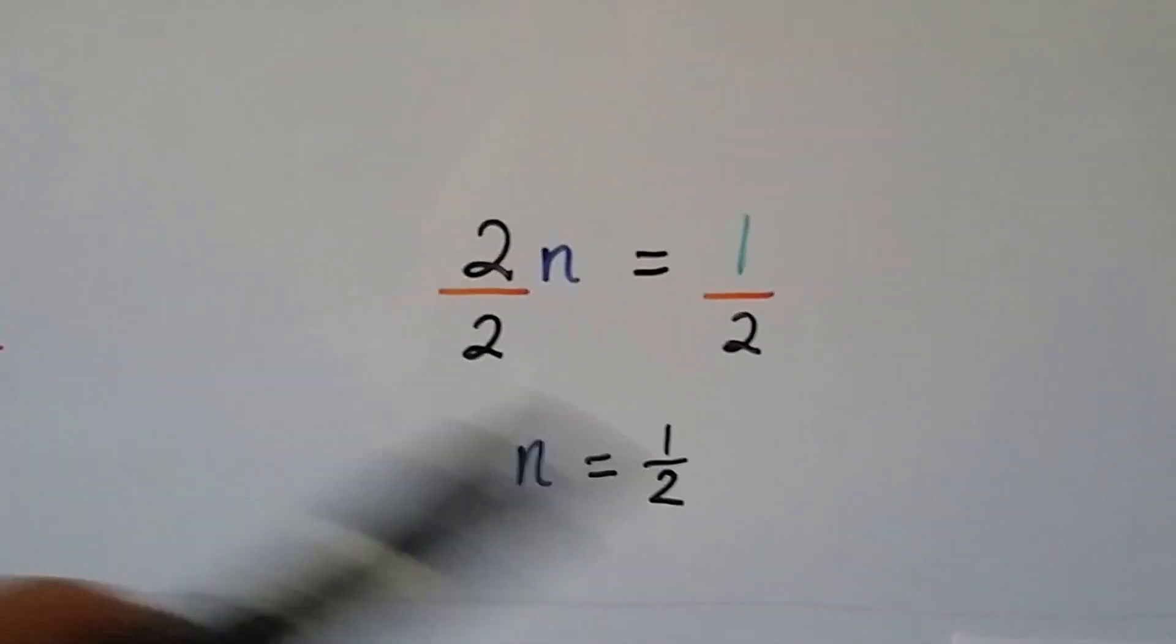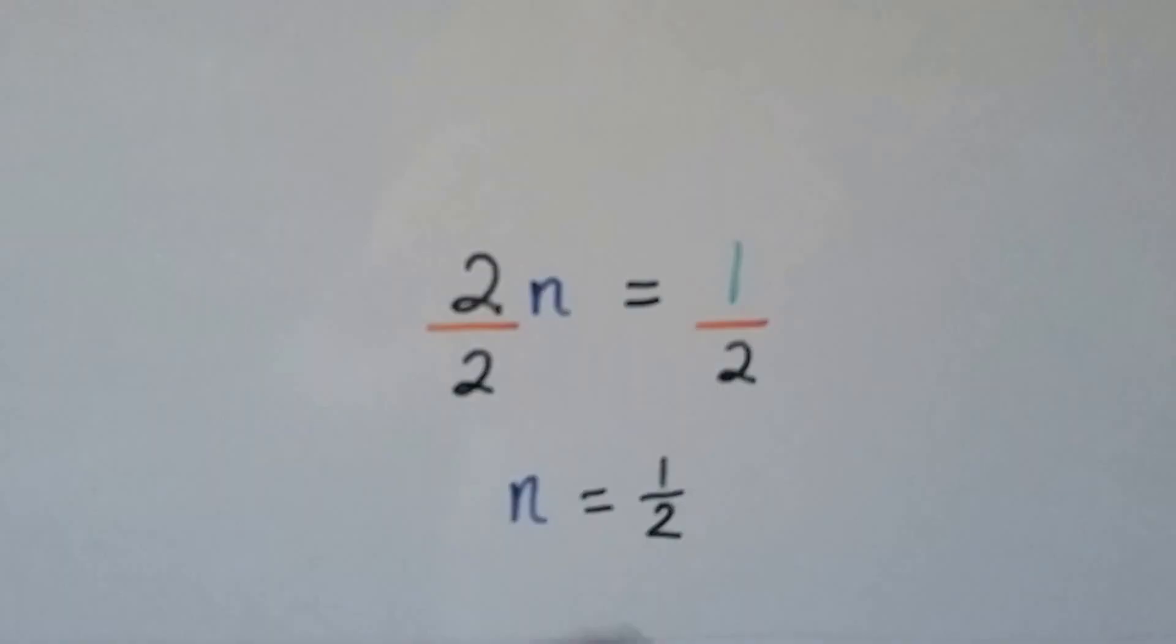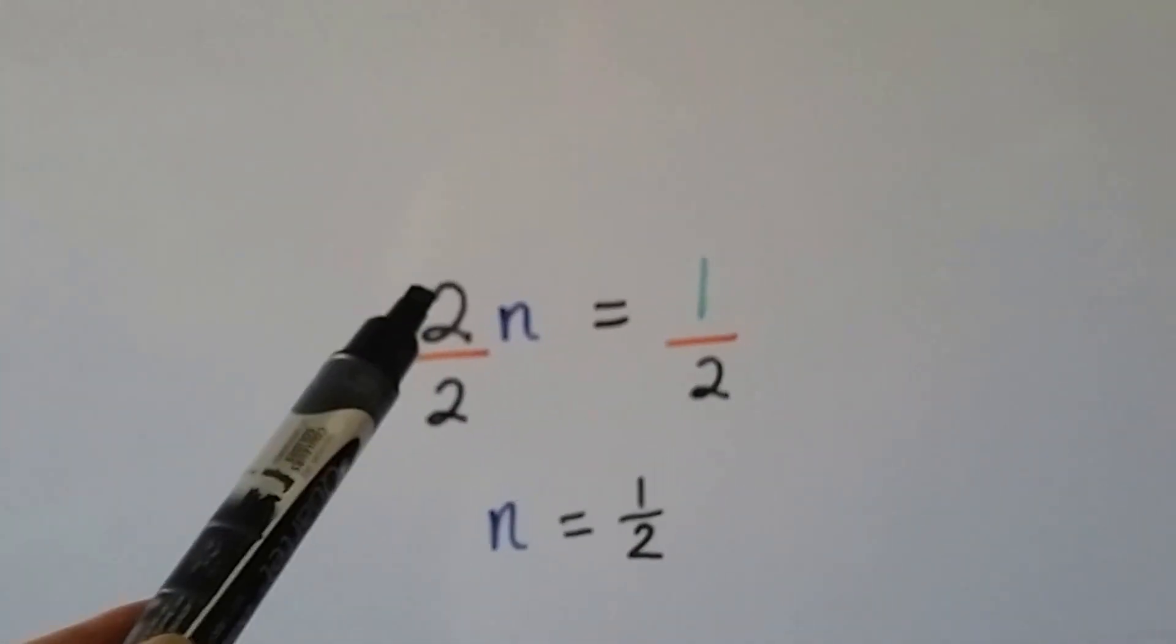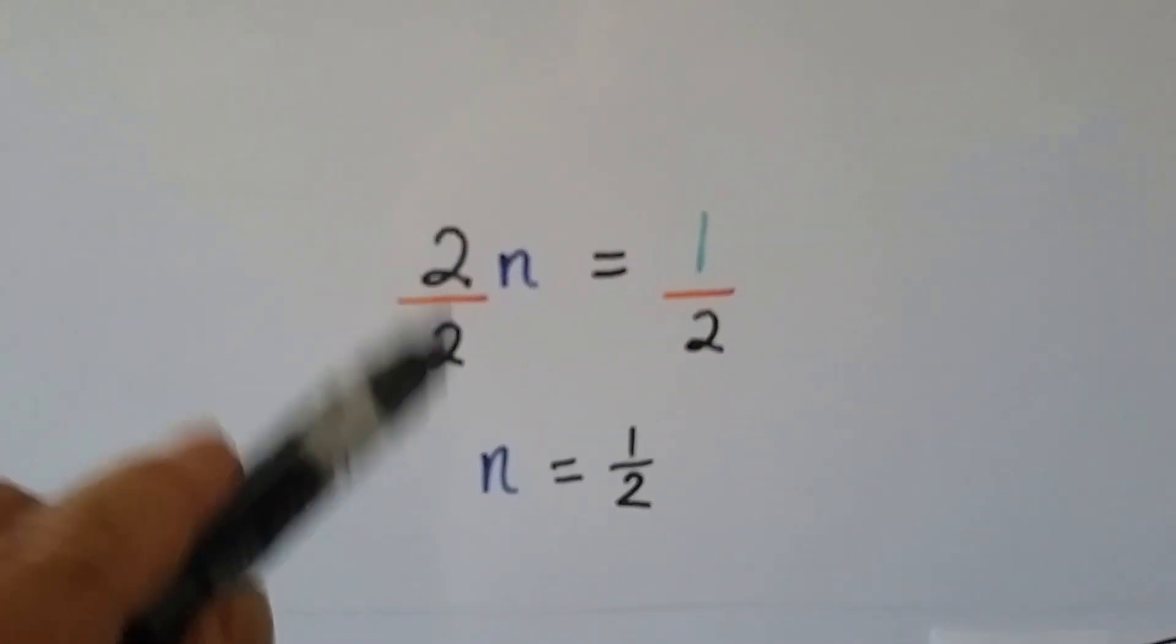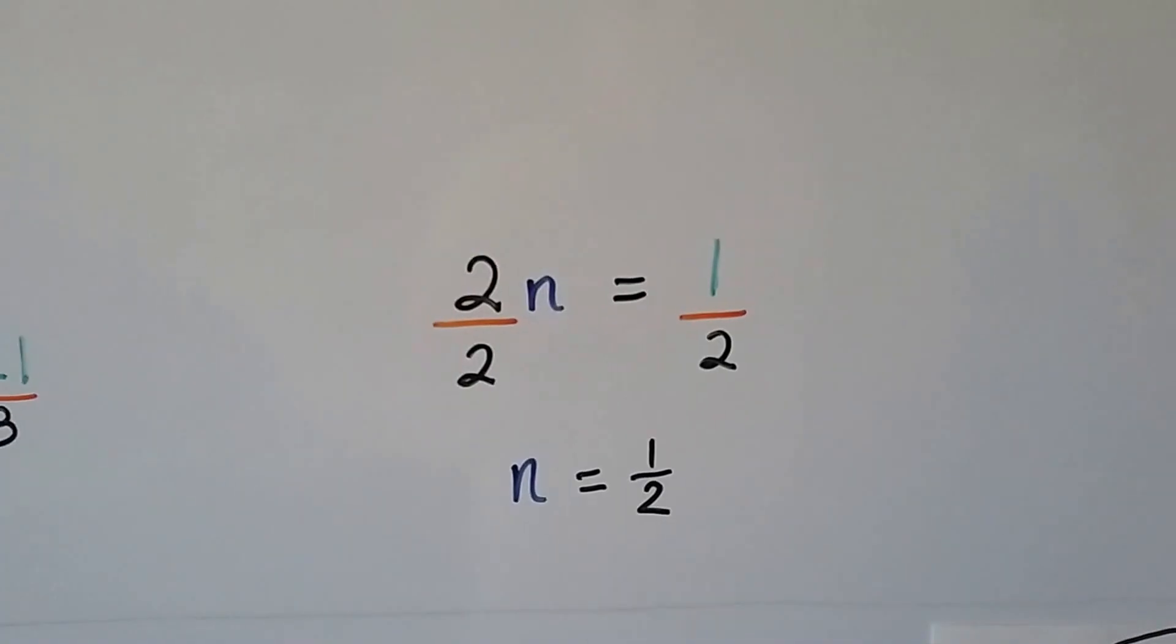Now this one's a little different. We have 2n equals 1. Our product is 1. It's smaller than that factor. When we divide both sides of the equation by this 2 coefficient, we get 1n equals 1 half. See that?